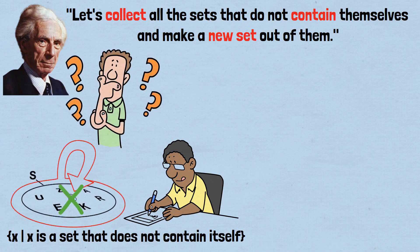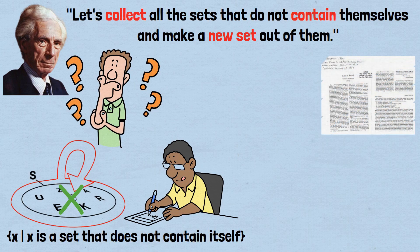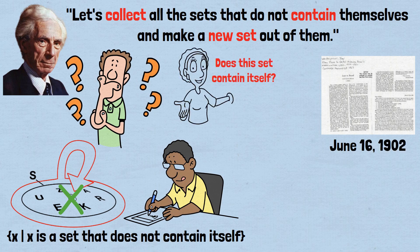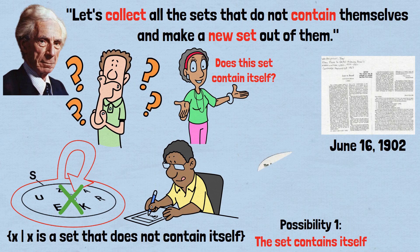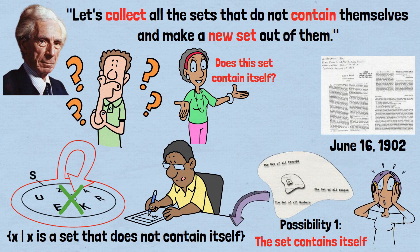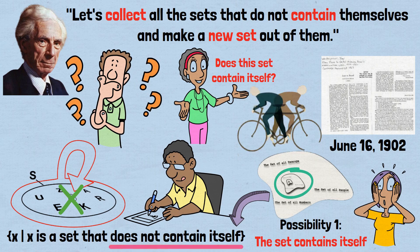Now comes the devastating question Russell posed in his famous letter to Frege on June 16, 1902. Does this set contain itself? Let's work through both possibilities. Possibility 1: The set contains itself. If this set does contain itself, then it would be a member of the set of all sets that do not contain themselves. But wait, the only sets in this collection are those that don't contain themselves. So if our set contains itself, it must not contain itself. That's a contradiction.